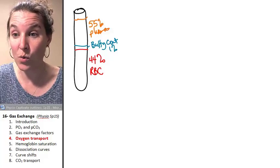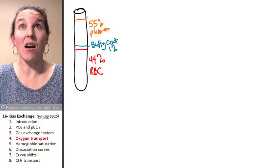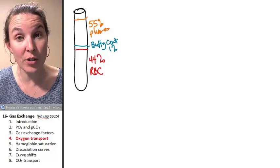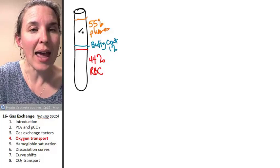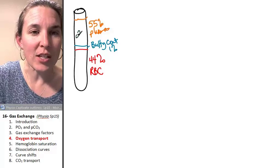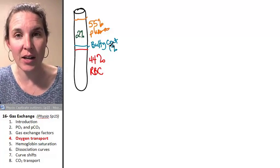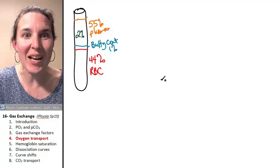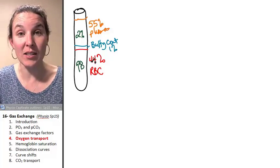Now, here's the scoop. Are you ready for this cool fact? We know that we can carry, we can get our partial pressure of our blood up to 100 millimeters of mercury of oxygen. However, that's only 2% of the oxygen that is carried in your blood is actually dissolved in your plasma. The rest of the 98% is carried on the red blood cells.